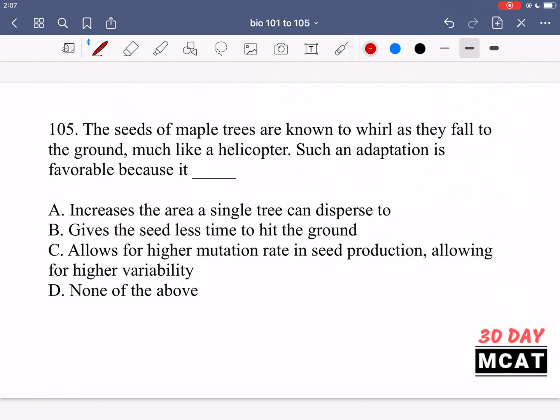Moving on to question 105. In this question, it says the seeds of maple trees are known to whirl as they fall to the ground, much like a helicopter. Such an adaptation is favorable because what? So if you've seen maple trees, you know that their seeds kind of look like this. The seeds are attached to leaves which rotate as they come down. So they twirl or whirl, kind of like a helicopter. And when they're coming down, this adaptation is favorable because what? Why is it that this was chosen by evolution?